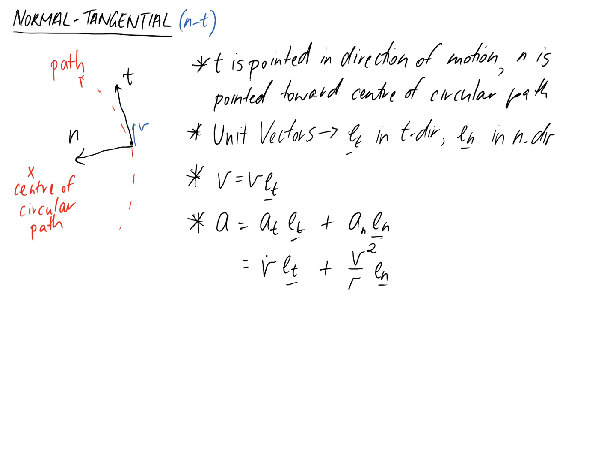In this case v again is just the velocity of your particle or whatever it is. And r is the radius of the circle it's on.